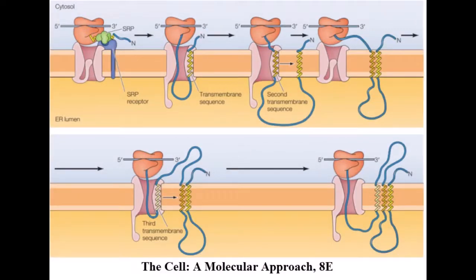In the third case, an internal transmembrane sequence results in insertion of the polypeptide chain with its N-terminal on the cytosolic side of the membrane. Translation proceeds until a second transmembrane sequence is encountered, causing the polypeptide chain to form a loop within the lumen of the ER as translation continues in the cytosol. This process can be repeated many times, resulting in insertion of a protein with multiple membrane-spanning regions.